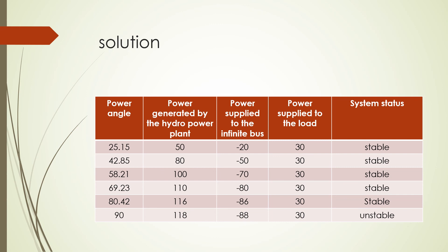This table shows the solution of the above problem. Column 1 indicates the power angle varying from 25.15 degrees up to a maximum of 90 degrees, with recorded values up to 80.42 degrees. From this table we can understand the system is stable while it supplies power to both the infinite bus and the load. Column 2 records the power generated by the hydropower plant, column 3 shows power supplied to the infinite bus, and power supplied to the load is 30 megawatt — a constant load connected at the infinite bus. At 25.15 degrees, the generator produces 50 megawatt: 30 megawatt supplied to the load and 20 megawatt remaining supplied to the infinite bus, indicating the system is stable.